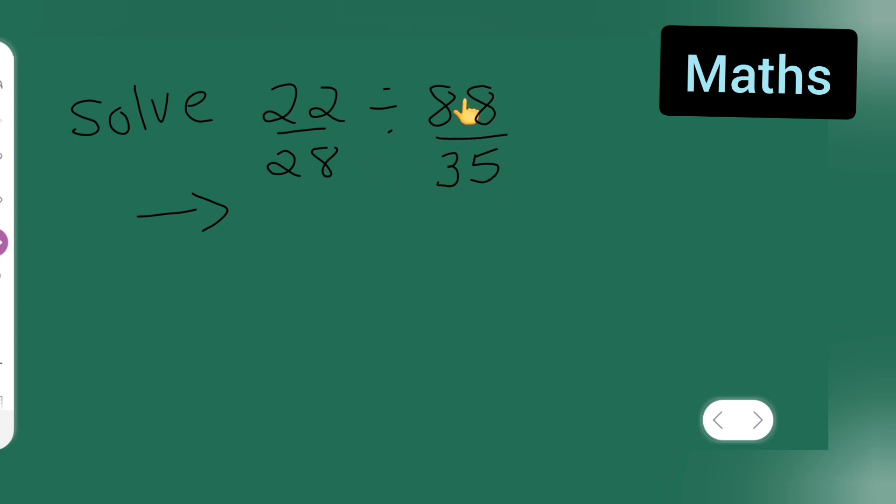Then take the reciprocal of this, that will be 35/88. So what you'll need to do is 22/28 multiplied by 35/88. Now something is getting cancelled.